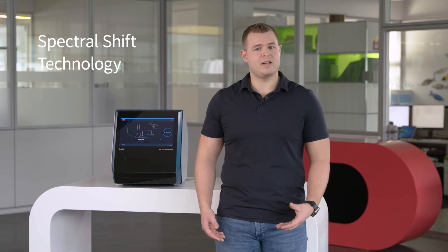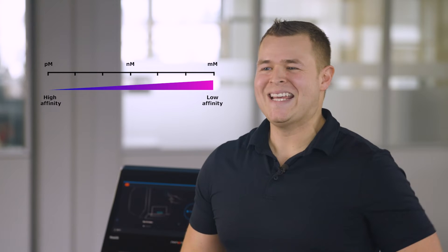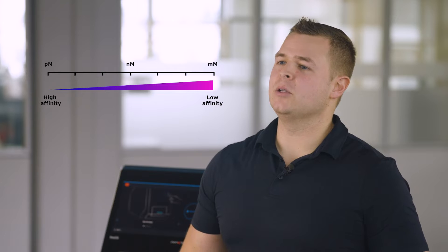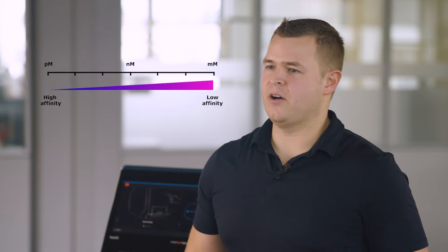The Monolith X instrument comes with two biophysical modalities. One is our spectral shift technology, and the other is our Microscale Thermophoresis, or MST technology. Both technologies determine the dissociation constant, or the KD, which shows you the strength of your molecular interactions. KD is measured in terms of molarity. A higher KD value in the micromolar to millimolar range indicates a low affinity interaction. Conversely, a lower KD value in the picomolar or nanomolar range indicates a higher affinity interaction.